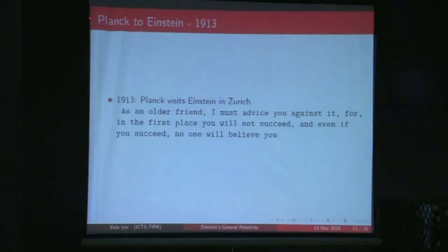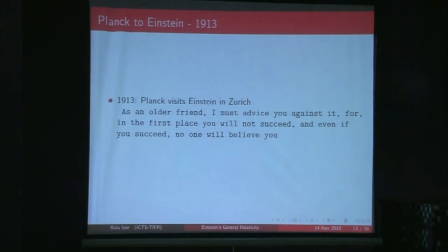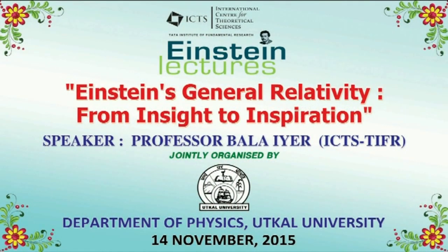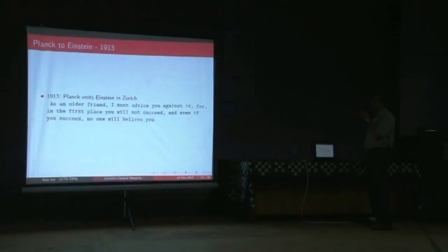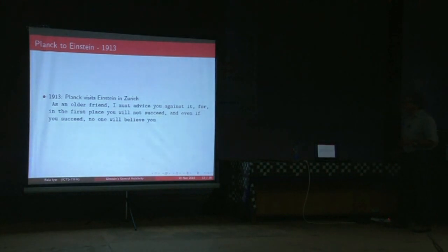In 1913, Planck visited Einstein in Zurich. Einstein told him he was working on a theory of gravity. Planck, as an older friend, advised him against it, saying: 'In the first place you will not succeed, and even if you succeed, nobody will believe you.' So Einstein's idea of viewing gravity as geometry was something even a scientist like Planck thought would not succeed.